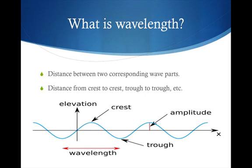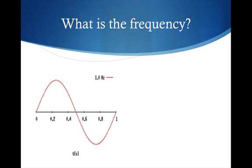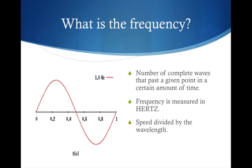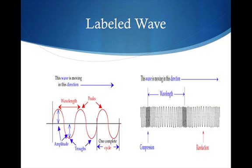Frequency of a wave has to do with how many cycles per second go by a given point - the number of complete waves that pass a given point in a certain amount of time. It's usually expressed in Hertz, which is cycles per second or waves per second, and it's the speed of the wave divided by the wavelength. It's also inversely related to the wavelength. So when the wavelength is long, the frequency is low, and when the wavelength is small, the frequency is high.